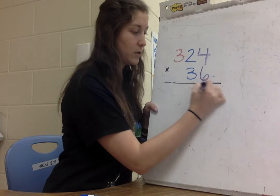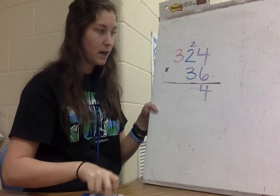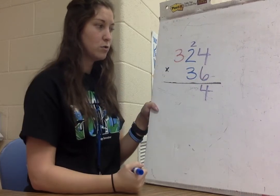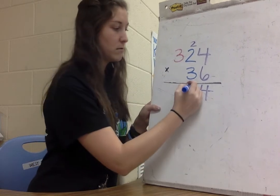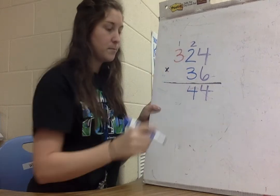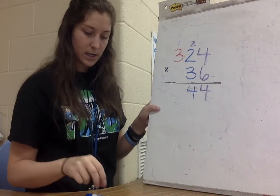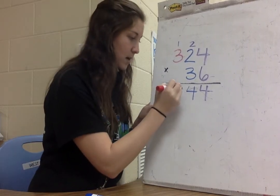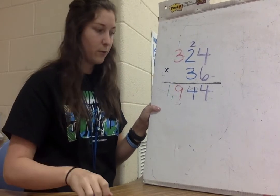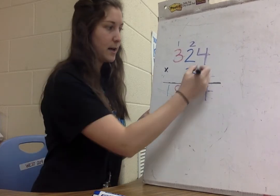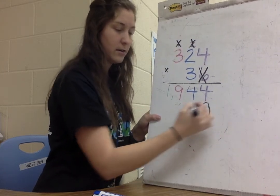6 times 4 is 24 — put the 4 down, carry the 2 up. Then 6 times 2 is 12, plus 2 is 14 — put the 4 down, carry the 1 up. Then 6 times 3 is 18, plus 1 is 19 — I get to write the full two-digit number 19 down. So my first partial product is 1,944. Now cross off the ones digit, cross off all carried numbers, and add your placeholder zero.